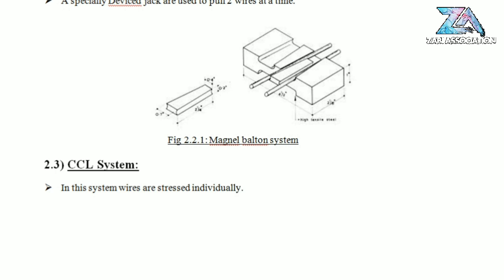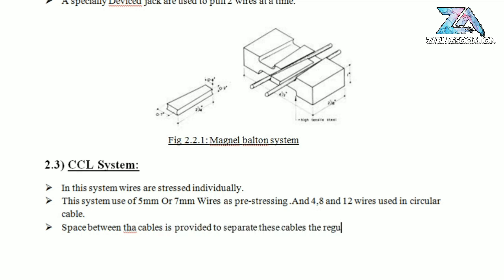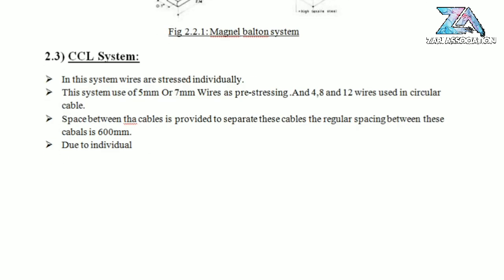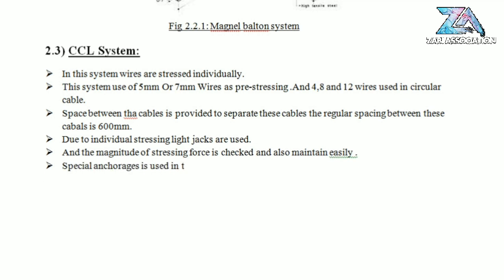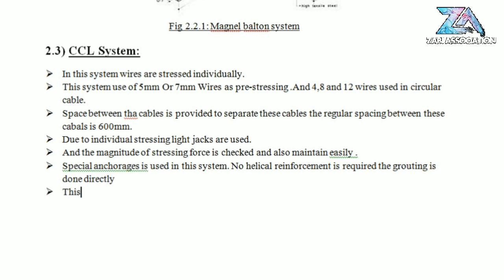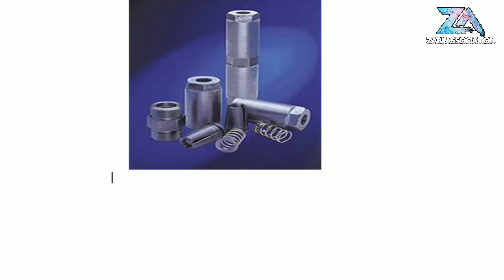The third system is the CCL system. In this system, wires are stretched individually. The system uses 5 mm and 7 mm wires as prestressing, and 4, 8, and 12 wire circle cables are used. Regular spacing of 600 mm is provided between cables. Due to individual stressing, light jacks are used and the magnitude of stressing force is checked and maintained easily. No helical reinforcement is required and grouting is done directly, making this system more efficient than others.